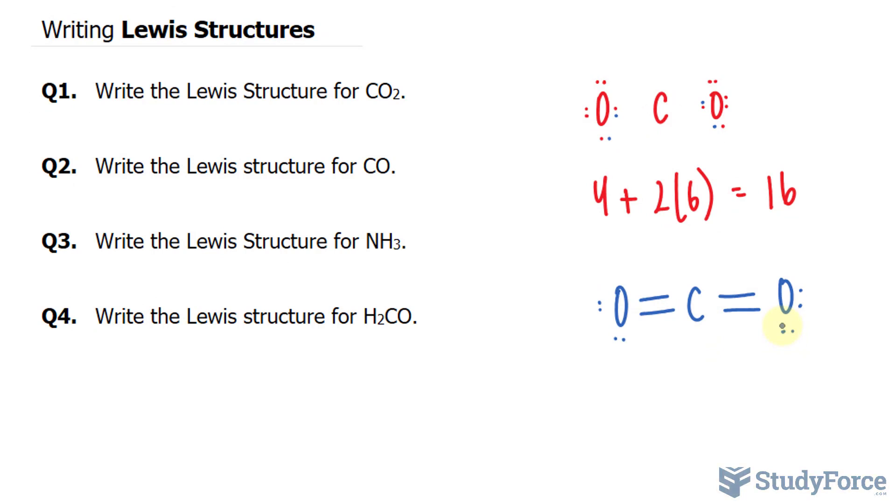Let's follow the exact same steps for question number 2. Once again, we'll start by writing out oxygen and carbon. We have carbon monoxide this time. The total number of valence electrons is 6 plus 4. So we have 6 plus 4 is equal to 10.